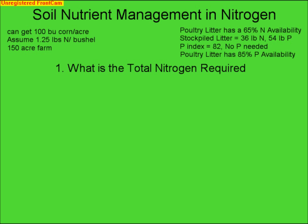The first thing we need to do is calculate our total nitrogen requirement. To get your total nitrogen requirement, we need to know our assumed yield in bushels per acre, how much nitrogen we are going to apply per bushel of corn — the average is between 1 and 1.25 — and then how many acres we have total. All these values are given in the table on top of this video.